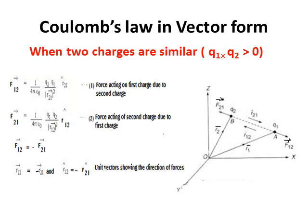Here r̂₂₁ will be equal to r₂₁ vector upon r. That means it is a unit vector in the direction from charge q2 to q1.